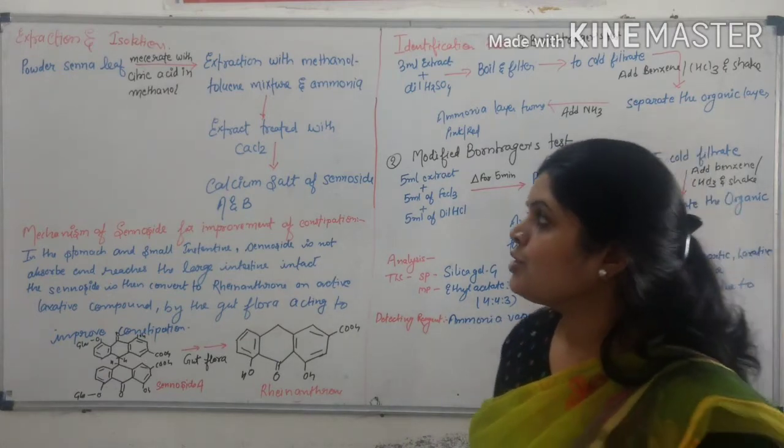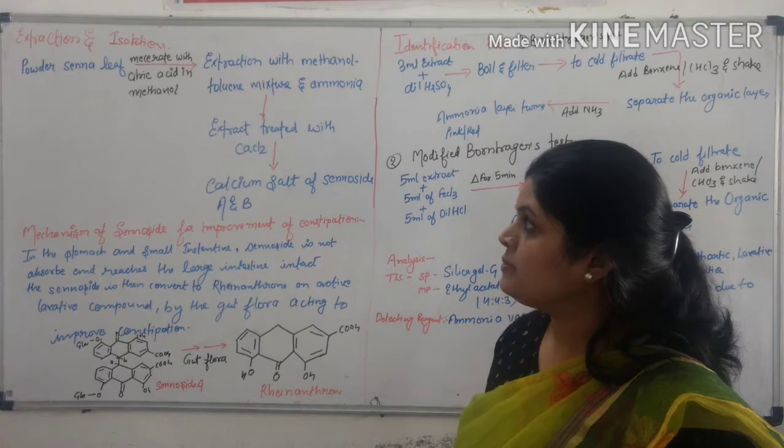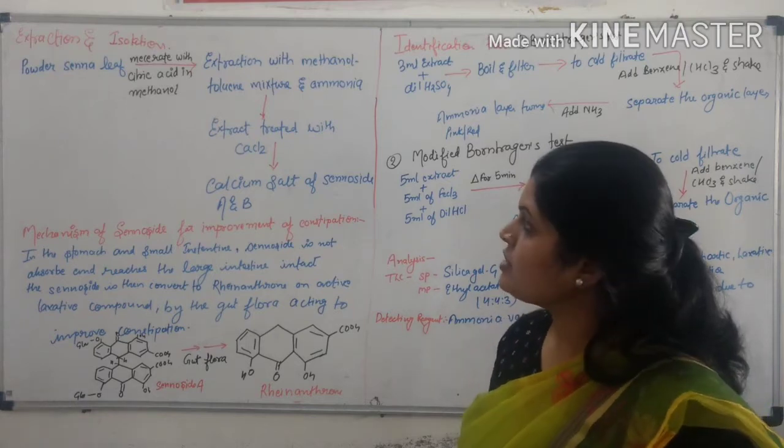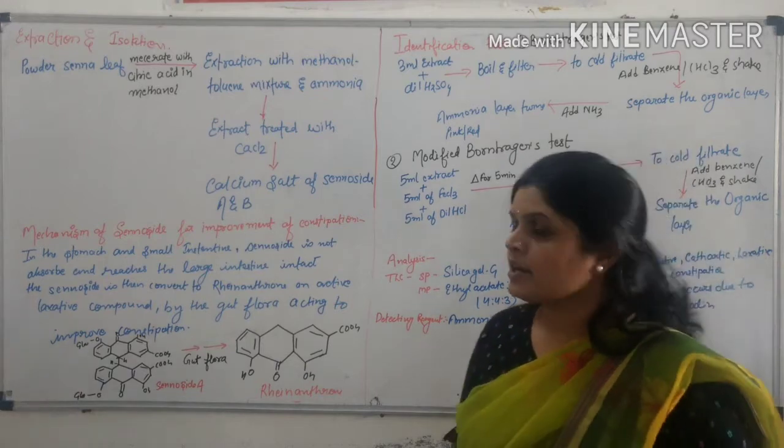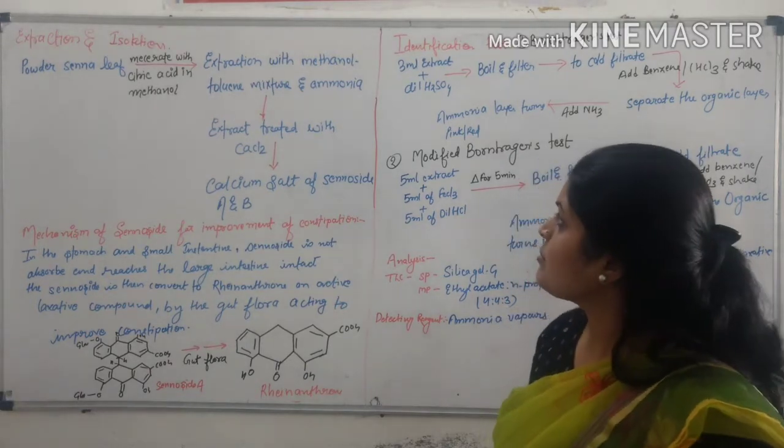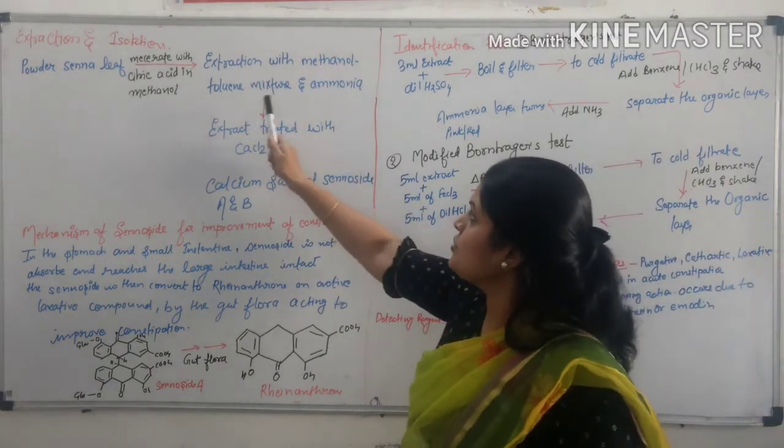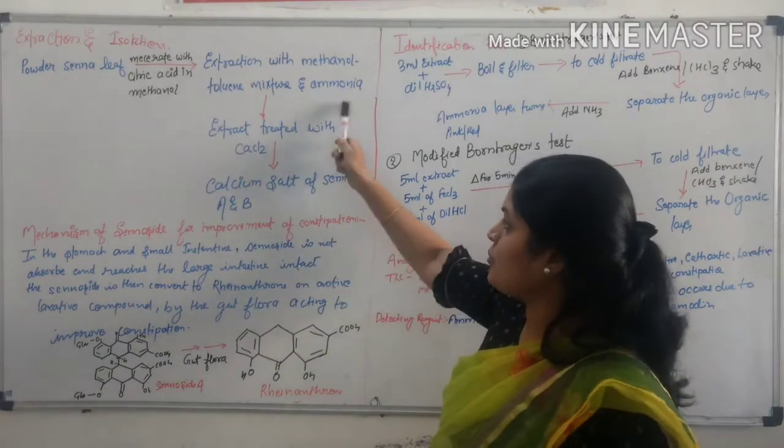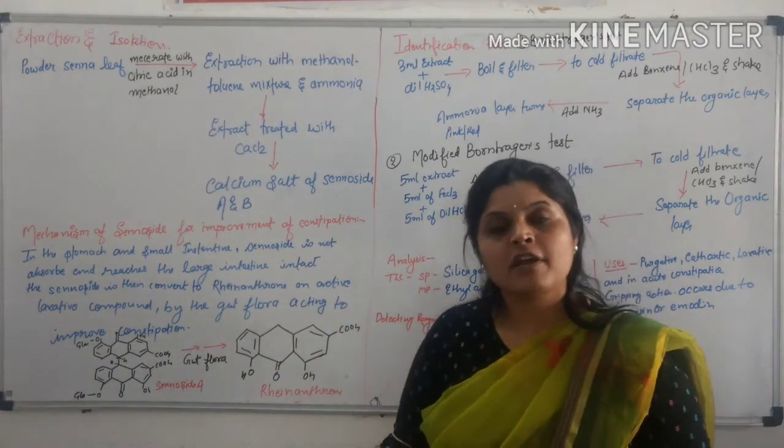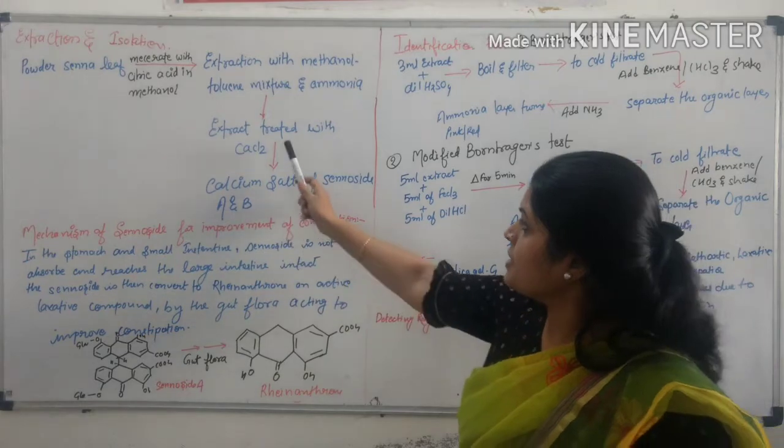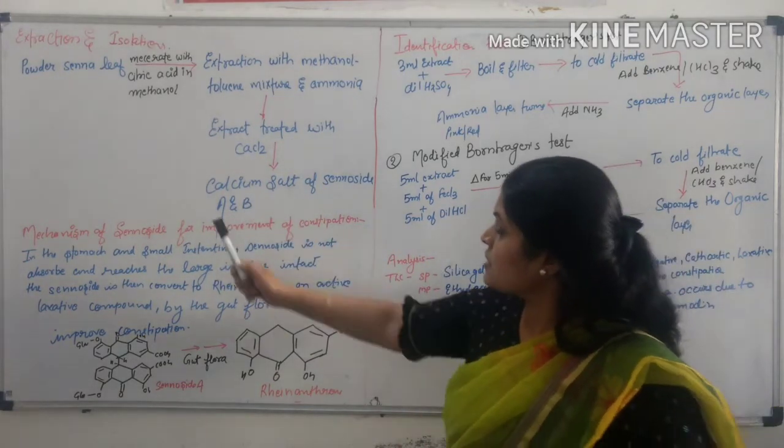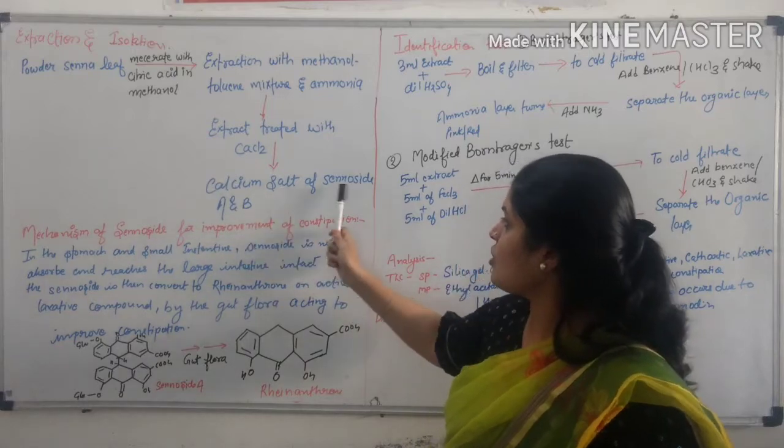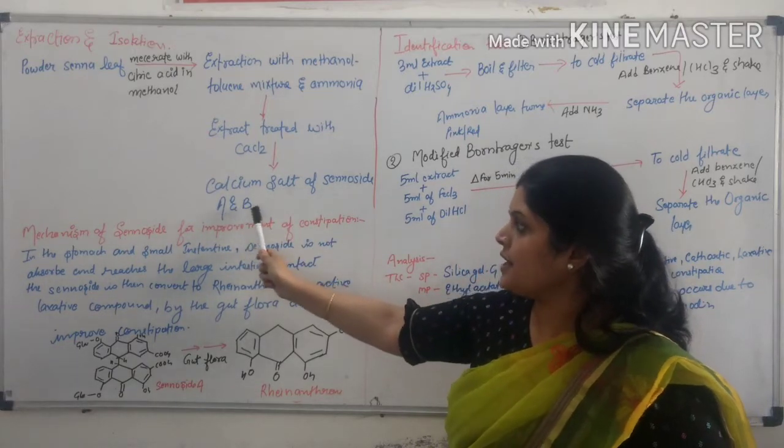In which powdered Senna is macerated with citric acid in methanol and undergoes the extraction process by using a mechanism of aqueous ethanol and ammonia. Extract is obtained and then treated with calcium chloride. Calcium salt called sennosides A and B.